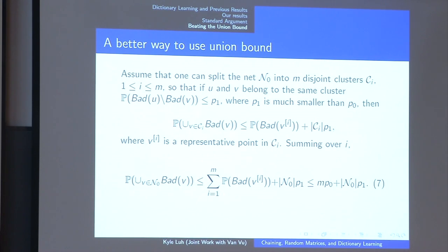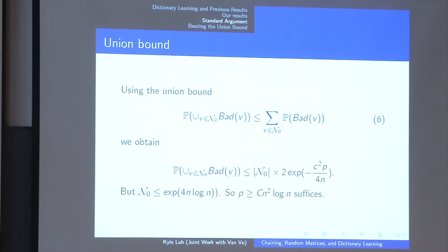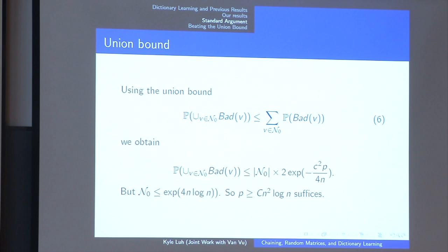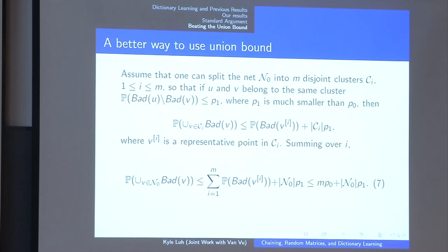At the time we were working on this problem, we were not aware of chaining or much less generic chaining. So our formulation is a bit simplistic in how we beat the union bound, but I think it's a more intuitive way to think about it. Let's imagine that we can cluster up all the points of N_0 such that the bad matrices in each cluster have a huge overlap. That makes intuitive sense: for a fixed vector v, the bad matrices are those such that Xv is large, and if v and u are close, the bad matrices should have a large overlap.